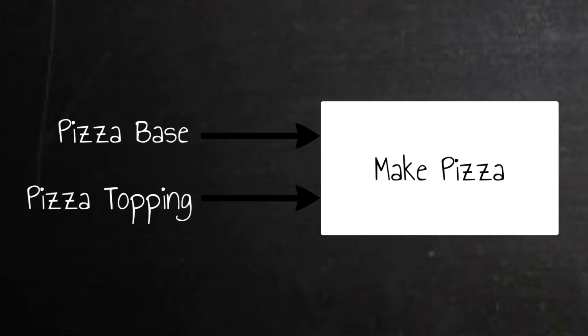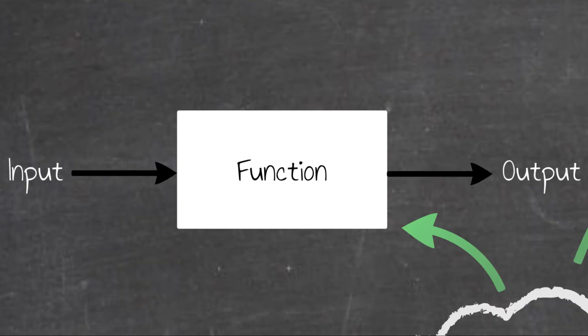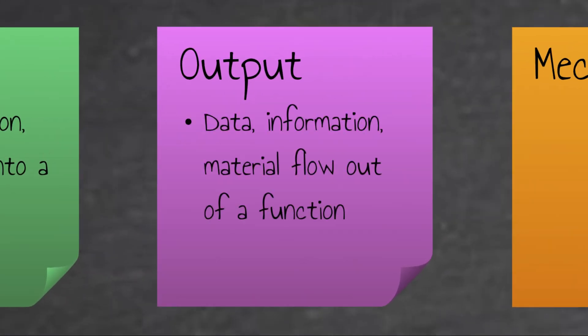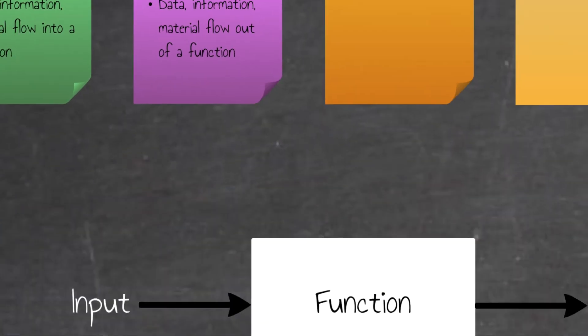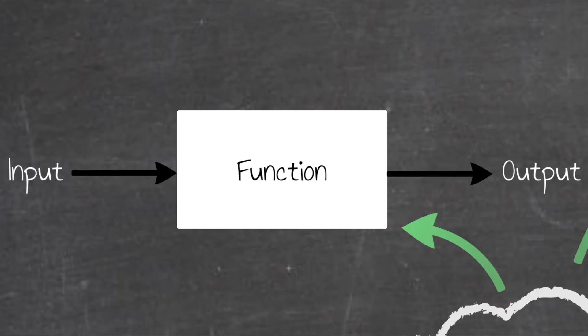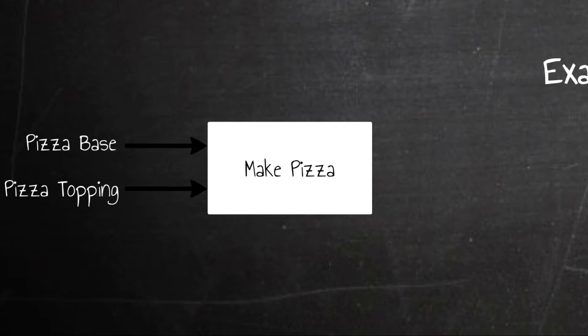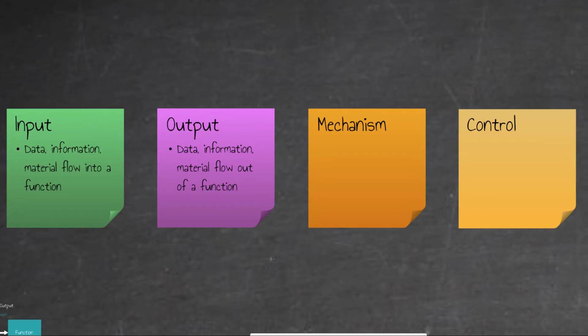The magic happens there in that rectangular box, and then we get one or more outputs, which means that an output then is a piece of information or material flow out of a function, meaning we have an arrow with the arrowhead pointing outwards. And in our make pizza example, cooked pizza would be one such output. Right, let's now focus on mechanisms and controls.